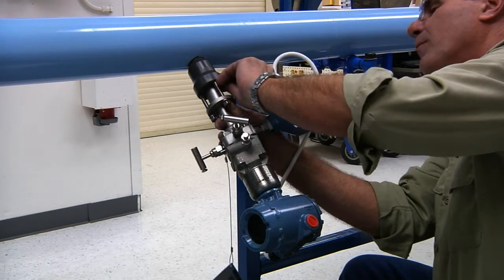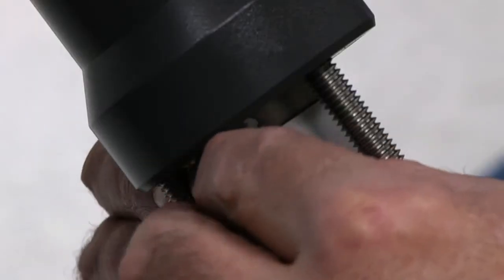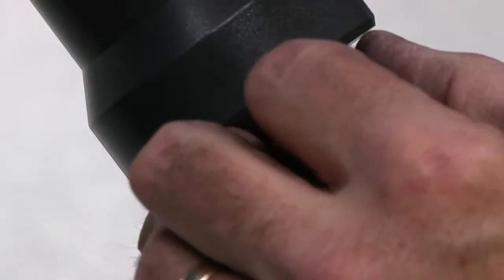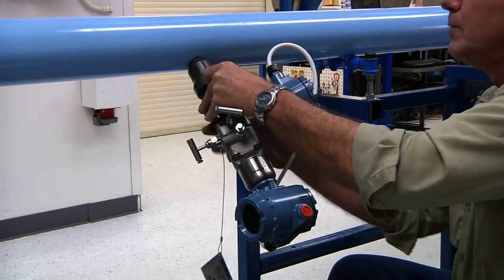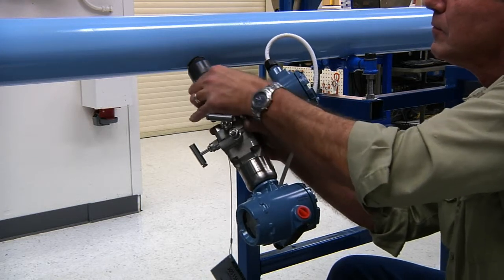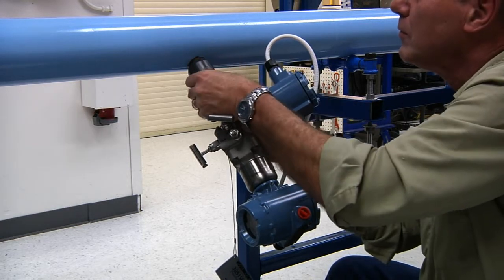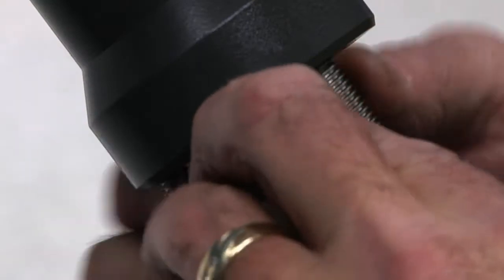To install the packing rings, push the packing ring into the pack lock body. Using the follower and compression plate, compress the packing down into the hardware. Repeat this process three times, alternating the location of the packing ring split 120 degrees until all three packing rings are installed.